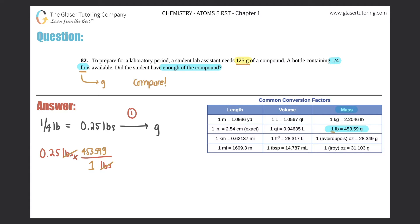Pounds cancel out. And you're left with 113.39, we'll just say 0.4 grams.